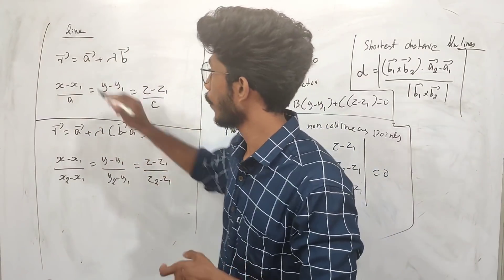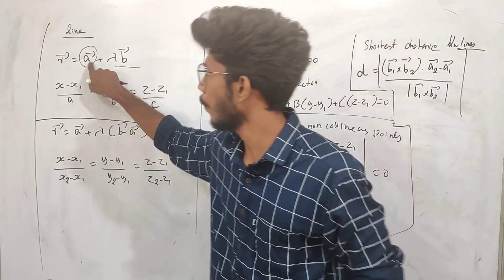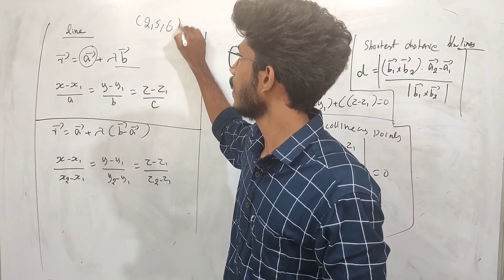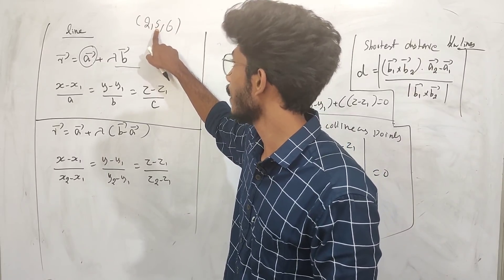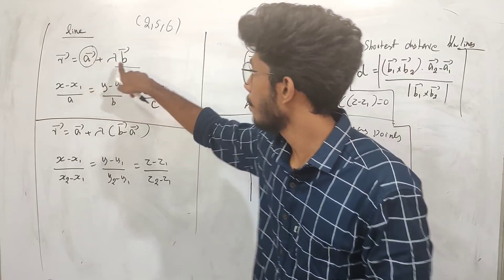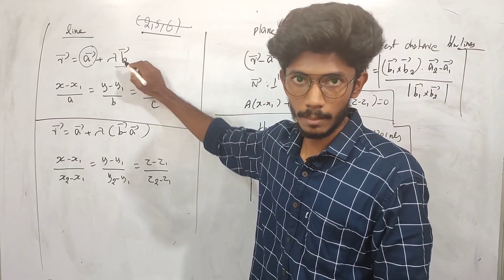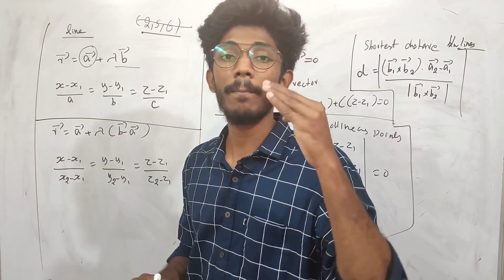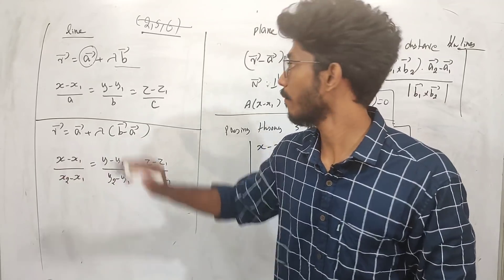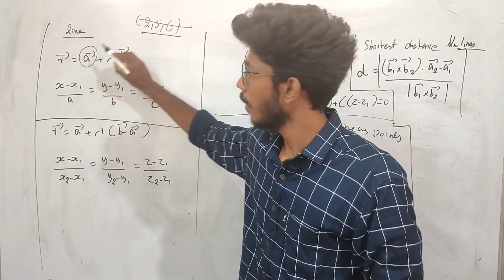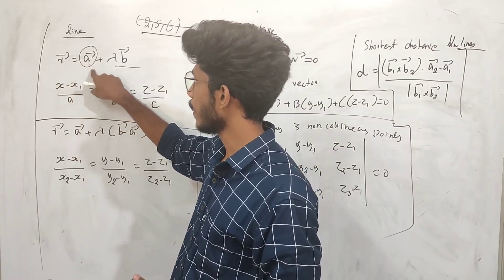The equation of a line passing through a point A, parallel to a given vector. If you have the point, you can write the vector as 2i + 5j + 6k, which is a vector. The direction vector B is parallel to the line. The vector equation is R = A + λB.